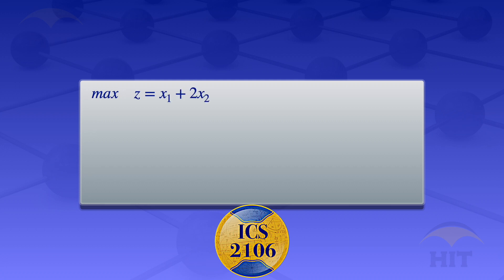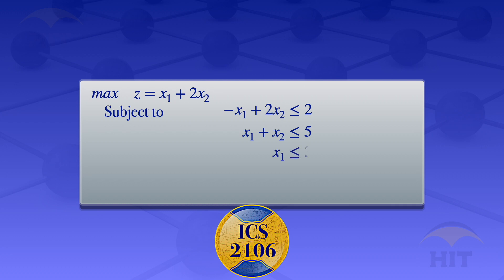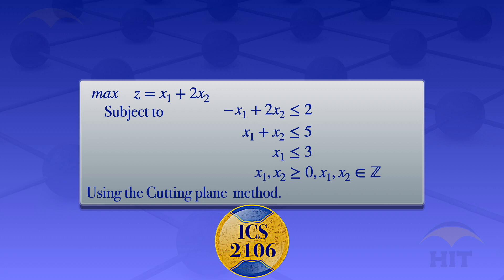Consider the problem: maximize z = x1 + 2x2, subject to the constraints: -x1 + 2x2 ≤ 2, x1 + x2 ≤ 5, x1 ≤ 3, x1 and x2 ≥ 0, and x1 and x2 being integers. I'm going to solve this integer programming problem using the cutting plane method.